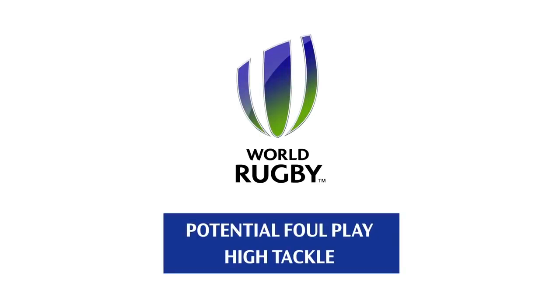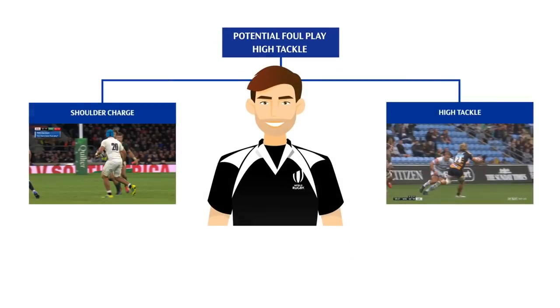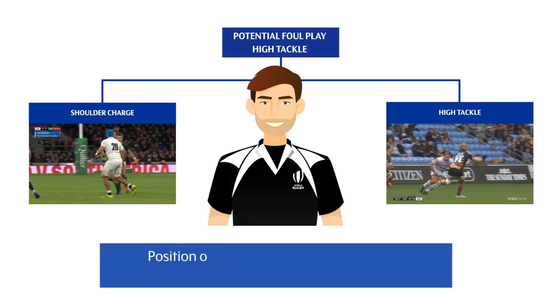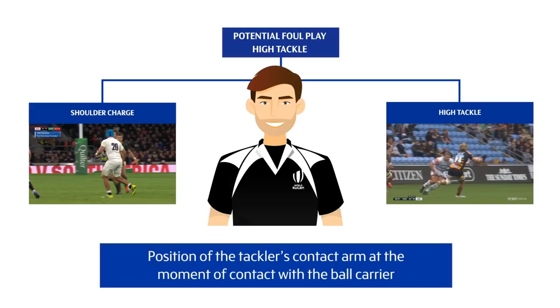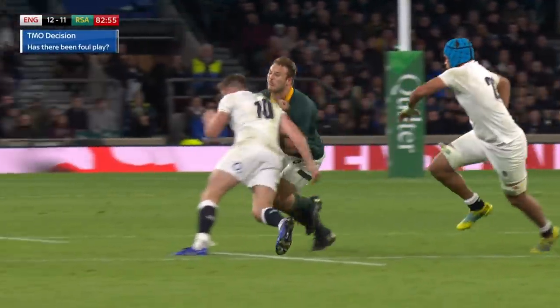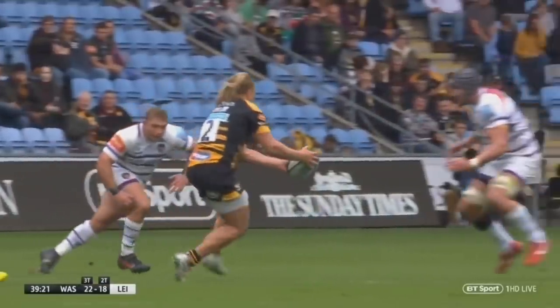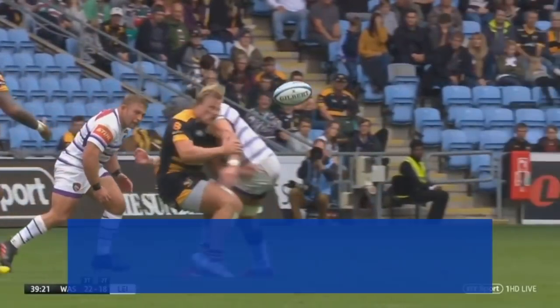When considering a potential high tackle, match officials must first determine whether the tackle is a shoulder charge or a high tackle. To do this, they must look at the position of the tackler's contact arm at the moment of contact with the ball carrier. This example is a shoulder charge because the contact arm is behind the tackler's body at contact. In the next example, the tackler's arm is in front of his body, so it is a high tackle.